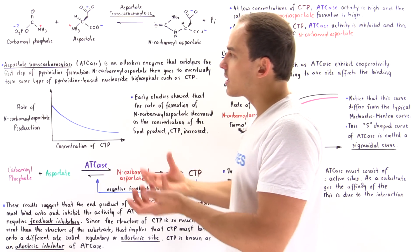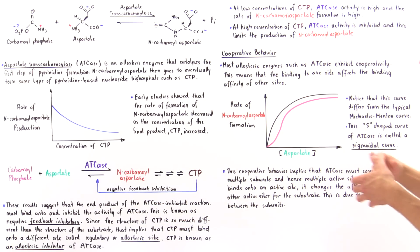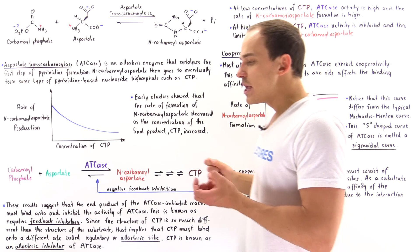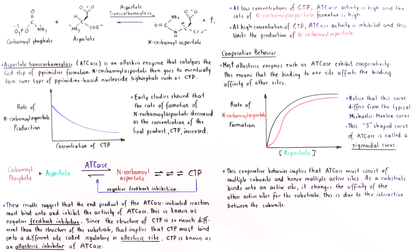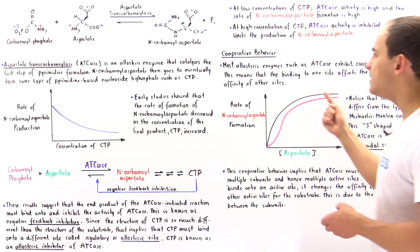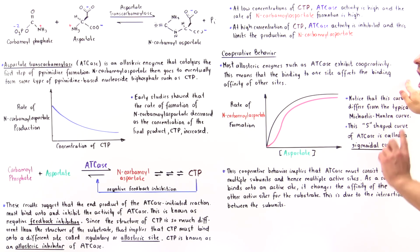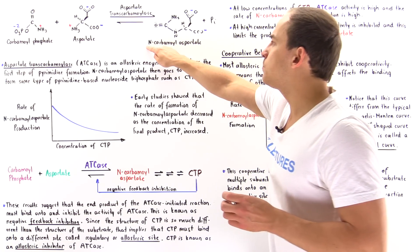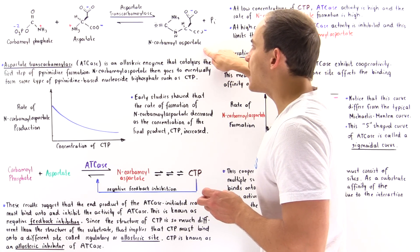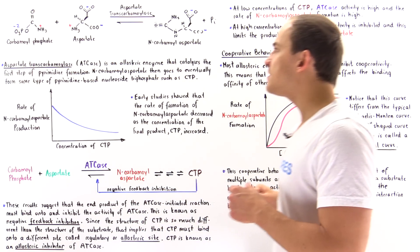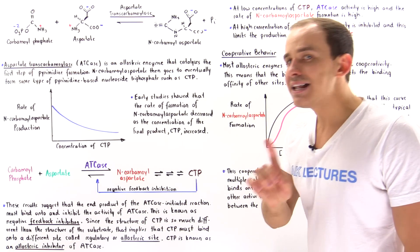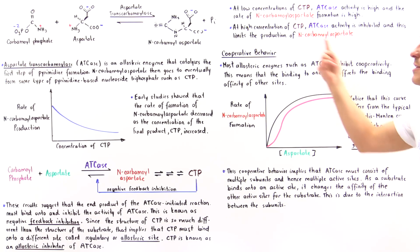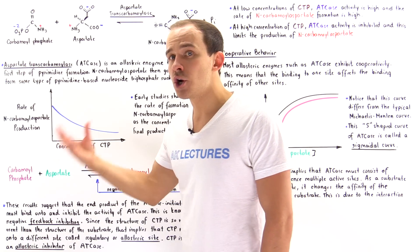The final thing to focus on in this lecture is that aspartate transcarbamoylase exhibits cooperative behavior. Like most allosteric enzymes, ATCase shows cooperativity, meaning the binding at one site affects the binding affinity of the other sites on the same enzyme. If we graph the rate of N-carbamoyl aspartate production versus the concentration of the substrate aspartate, we see not the typical Michaelis-Menten curve, but a sigmoidal S-shaped curve — because this enzyme and allosteric enzymes in general exhibit cooperative behavior.